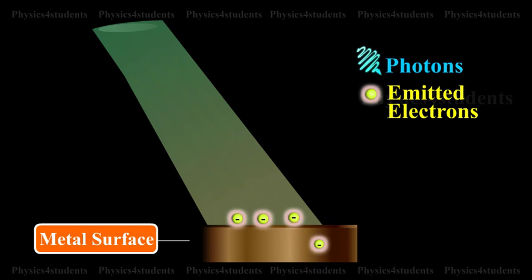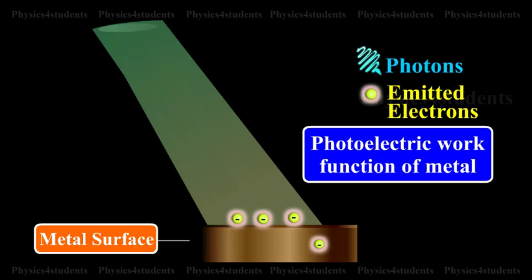This energy W spent in releasing the photoelectron is known as the photoelectric work function of the metal.